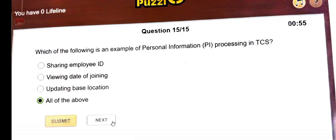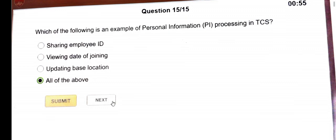Hello everyone and welcome back to the channel. In this video we are going to share 64091 TCS course ID answers. Question number one: which of the following is an example of personal information PI processing in TCS? The answer is all of the above.